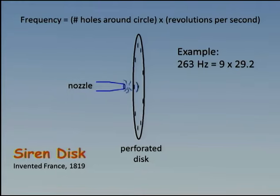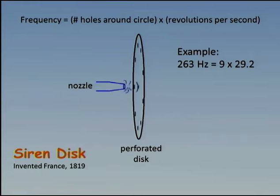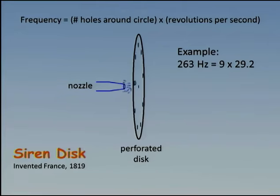Pitch is a perceived quantity. If we want this to actually sound like middle C, we need to have our holes evenly spaced around the circle. There are some interesting experiments you can do with pitch perception with a siren disc, where you have the holes unequally spaced. I'm not going to show you those today, but be aware that they exist.